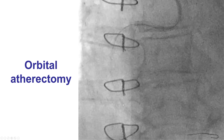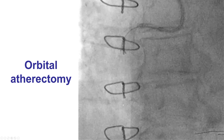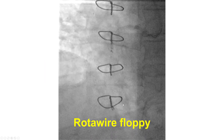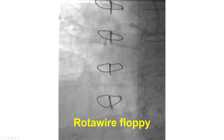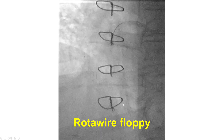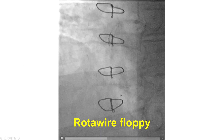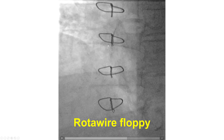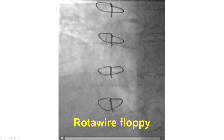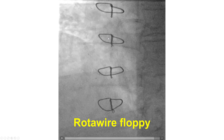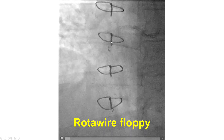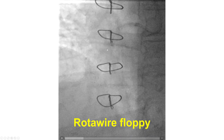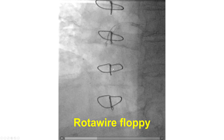We performed multiple passes with orbital atherectomy, but unfortunately were again unable to cross the lesion. We then considered rotablator as potentially better, repeated the process of advancing the microcatheter as far into the lesion as possible. However, this time we had potentially disrupted the lesion, and we were unable to exchange for the rotawire — the rotawire actually buckled up into the lesion and could not be delivered any further.